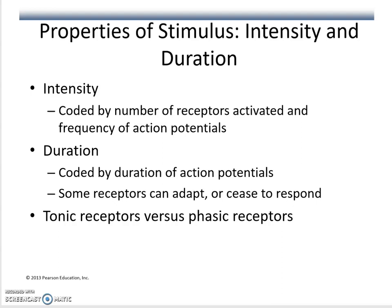Intensity and duration are encoded as follows: intensity is coded by the number of action potentials — more action potentials means higher intensity, fewer means less intensity. Keep in mind that action potentials are always all-or-nothing; you can't have a large versus small action potential. You can only vary the number of action potentials. Duration is encoded by how long these action potentials continue to fire.